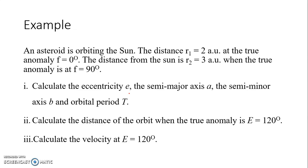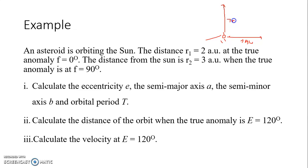For this example, we have an asteroid orbiting the sun. The first position is r₁ = 2 AU at true anomaly F = 0°, and the second position is r₂ = 3 AU at true anomaly F = 90°. We can draw this: the sun is at the center of mass, the asteroid starts at 2 AU at 0°, then moves to 3 AU at 90°, tracing an elliptical orbit.